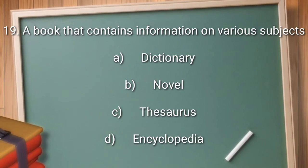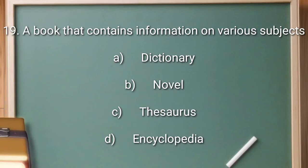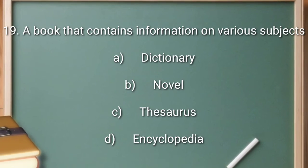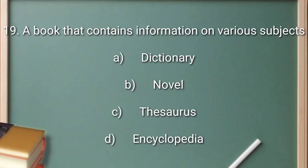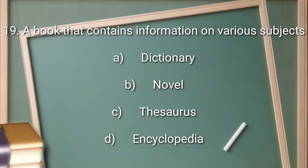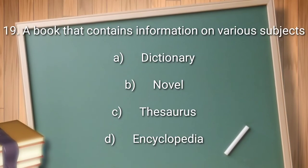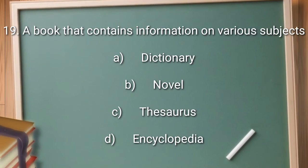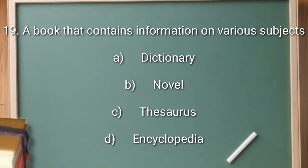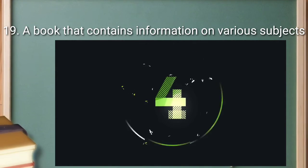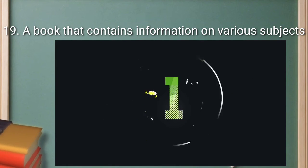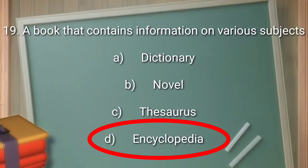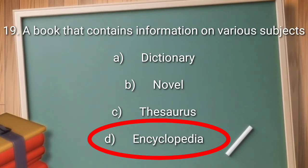Question number 19: a book that contains information on various subjects. Option A: dictionary. Option B: novel. Option C: thesaurus. Option D: encyclopedia. The right answer is option D: encyclopedia.